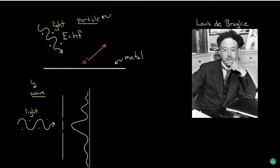That's where things stood when, in 1924, a young French physicist named Louis de Broglie wrote a paper. Everyone else was worried about light and light behaving like a particle or a wave depending on the experiment.